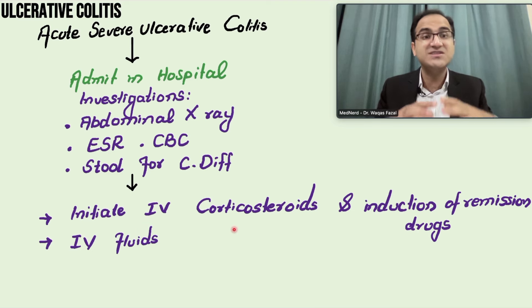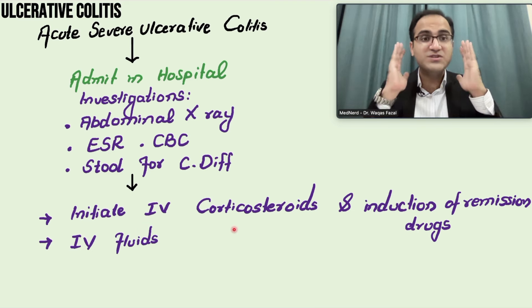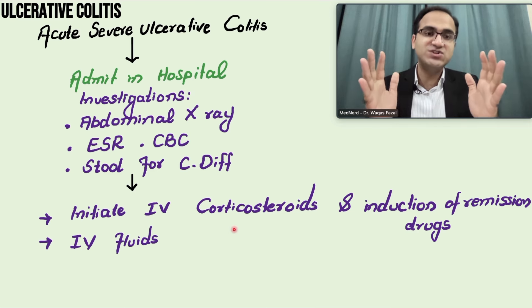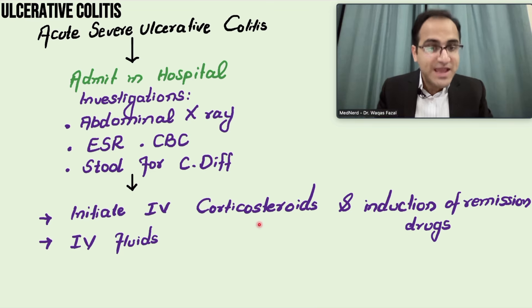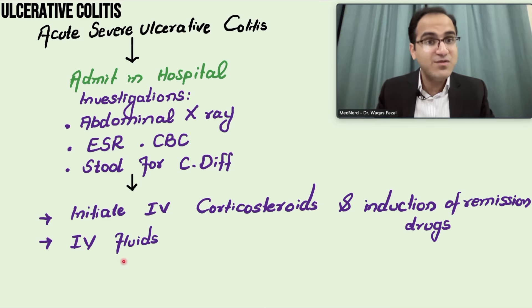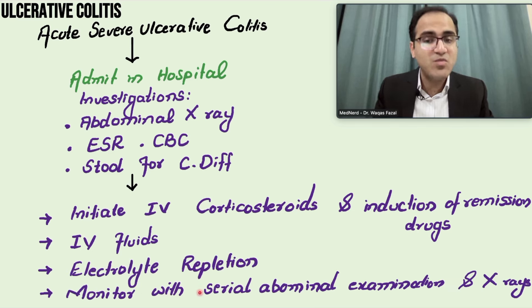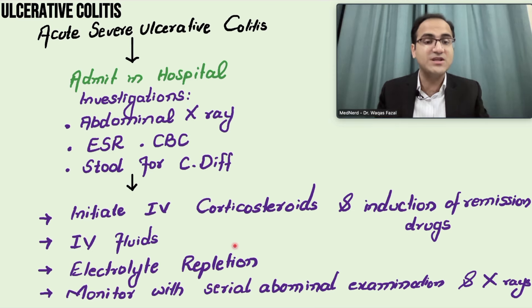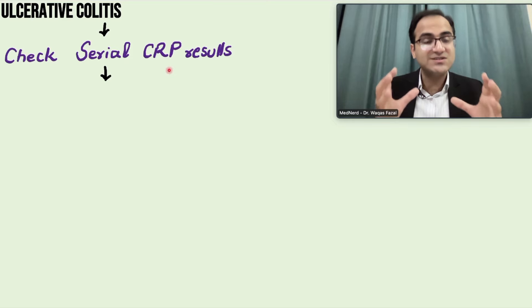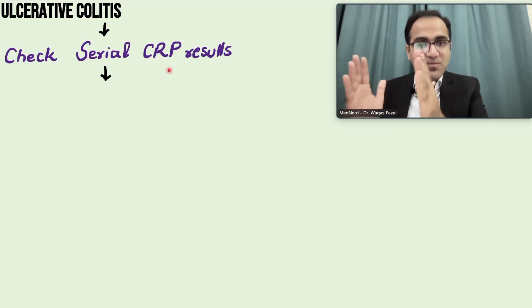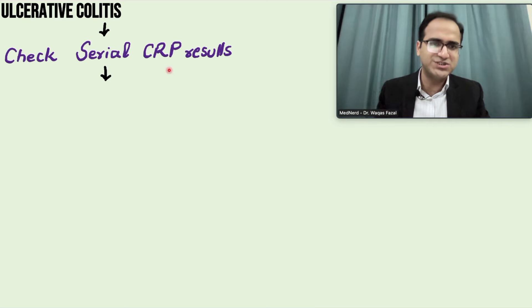In chronic treatment, steroids are not recommended, but in patients presenting with exacerbation, you start IV steroids to reduce the inflammation in the gut. Give IV fluids because these patients are dehydrated and in shock. Replete electrolytes and monitor them with serial abdominal examinations and abdominal X-rays — look for toxic megacolon. Perform serial CRP levels; elevated CRP and hypoalbuminemia are poor prognostic factors.